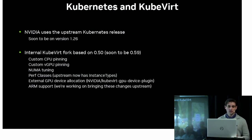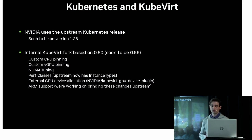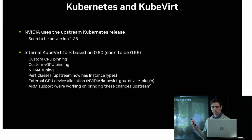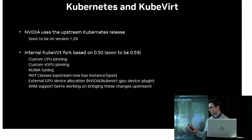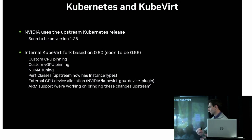We use the upstream release of Kubernetes — we're making our way to 1.26 now. For KubeVirt, we maintain a fork. We have a bunch of reasons for this, mainly because of things we needed to customize: CPU pinning, vCPU pinning, a few things needed to make it consumable for us. We use 0.5.0 and are eventually making our way to 0.5.9.